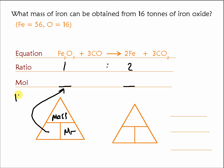And then we take that mass and divide it by the Mr. And that will give us the amount in mole. And the mass is 16 tonnes. That's 16 times 10 to the 6 grams. And the Mr is 2 times 56 plus 3 times 16. That comes out as 160. So that means that the amount in mole is 1 times 10 to the 5 of the iron oxide.